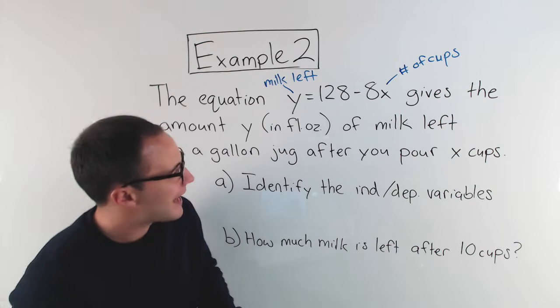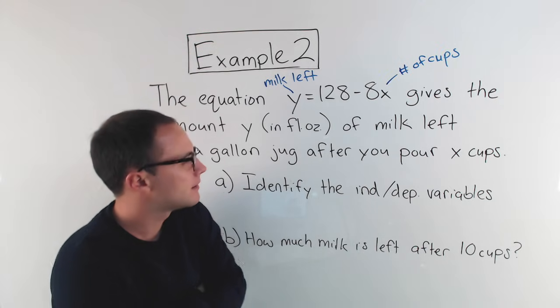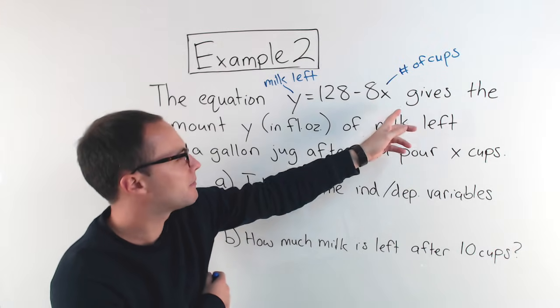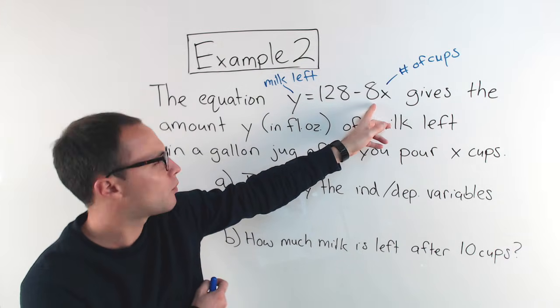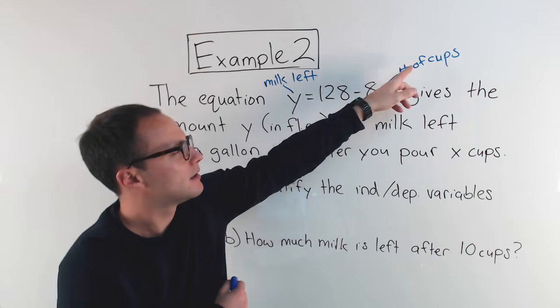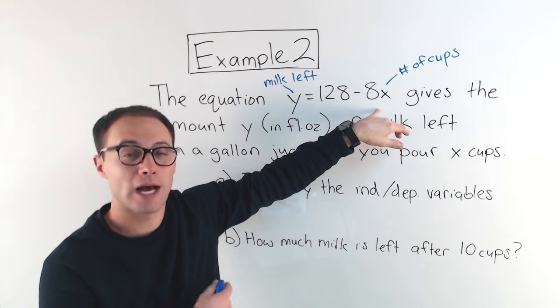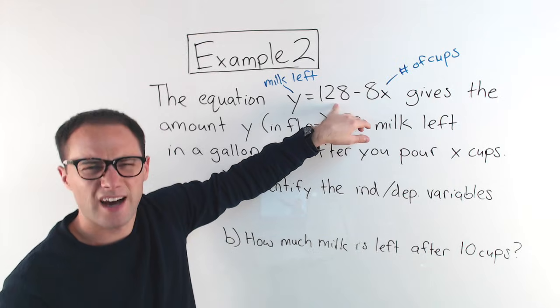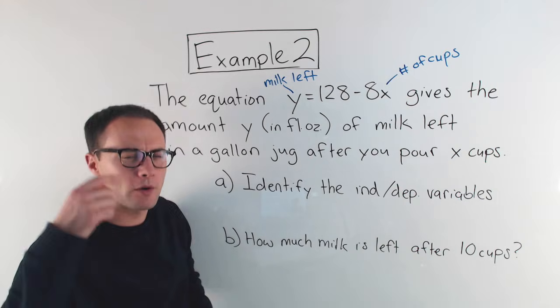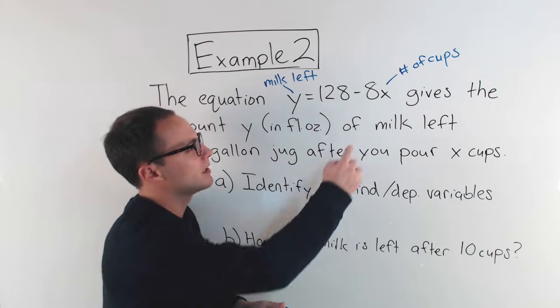So if I think about that, you might notice, well then, if we're subtracting 8x, where did that 8 come from? Right, for example, if we poured one cup, we multiply it by 8. Why would we multiply it by 8? If you look here, y is in fluid ounces, this is in cups. We're multiplying the amount of cups times 8. That's because there's 8 fluid ounces in a cup.